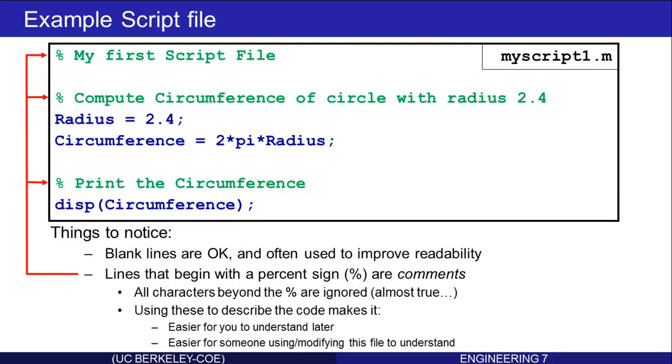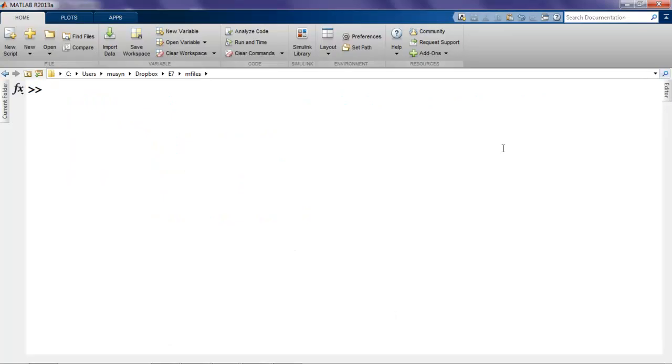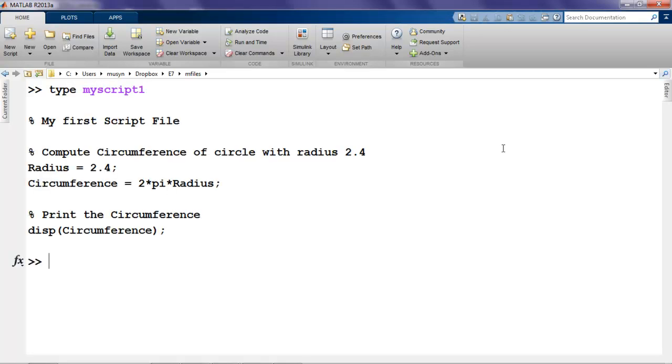Alright, let's go try this in MATLAB. The command type shows the contents of a file. There it is, as we saw on the slides. My first script file, compute the circumference, two assignments to the radius and the circumference, and then finally the circumference is printed with the disp command. Let's try it.